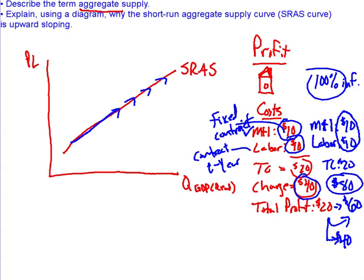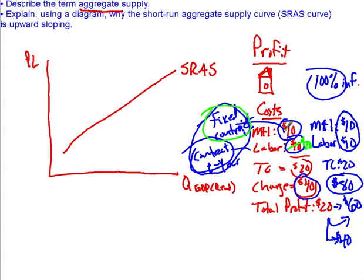Now what happens after the year passes and these contracts come up for renegotiation? Workers are going to say the price of everything has doubled — they can't survive on ten dollars an hour anymore and will demand twenty. Lowe's will say they won't sell wood for ten dollars anymore; prices have doubled so the contract is now twenty dollars. When we rework this in the long run, materials go to twenty and labor goes to twenty, so total cost is now forty dollars. Selling at eighty, total profit is forty — the exact same real purchasing power as before. Everything returns to the beginning in the long run.